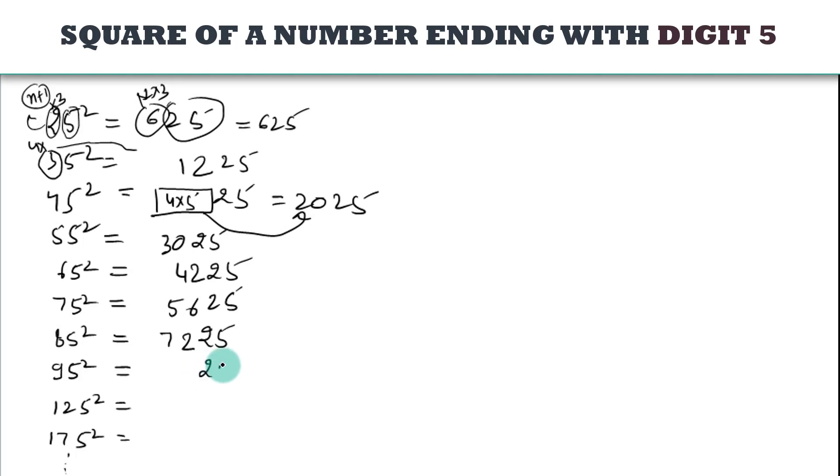95, you will get, 5 square how much? 25, 9 into 9 plus 1 is 10, 9 times 10 how much? 90. So 9025 is the square.